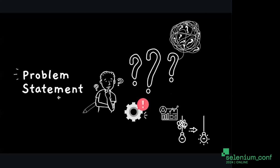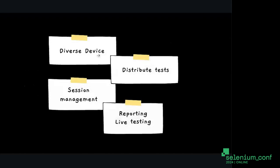We're going to talk a lot about the device farm — let's start with problem statements. When we wanted to build an in-house device farm, there were several challenges. We needed to cater to diverse devices connected to the farm, not just for manual testing but also for automated testing. Key concerns included how to distribute and parallelize tests, session management — ensuring sessions don't override each other — and of course reporting and live testing.